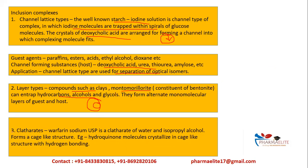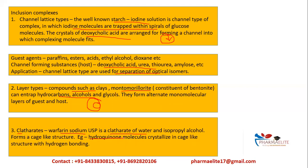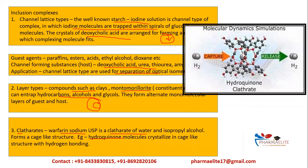The next category is clathrates. You can remember clathrates — C for cage. A cage-like structure is formed in clathrates. An example is warfarin sodium USP, which is a clathrate of water and isopropyl alcohol. Hydroquinone molecules crystallize in a cage-like structure held by hydrogen bonding. It is an entrapped cage-packed structure connected by hydrogen bonds, capturing and releasing hydrogen.